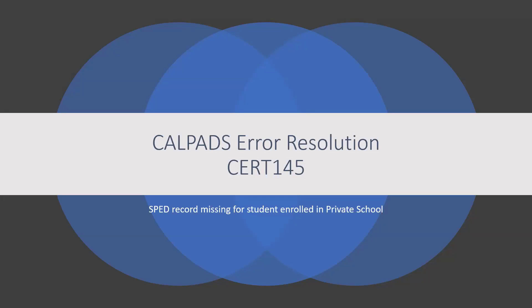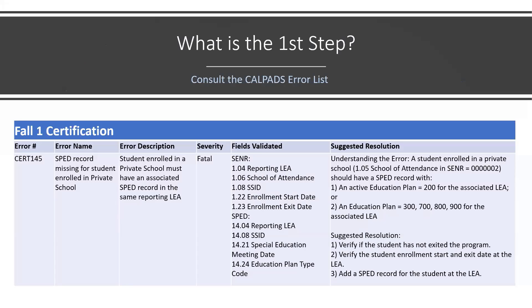CALPADS Error Resolution, CERT 145: Special Education Record Missing for Student Enrolled in Private School. Before you, is an excerpt from the CALPADS Error List. The first thing you should do when troubleshooting any error is retrieve the CALPADS Error List and consult it.